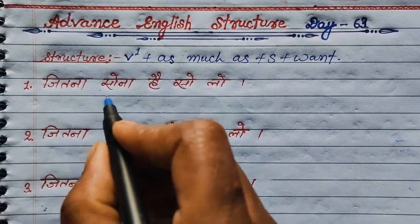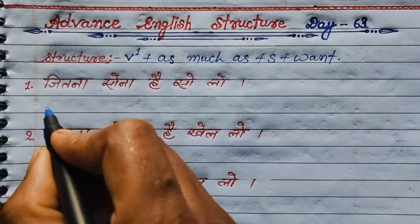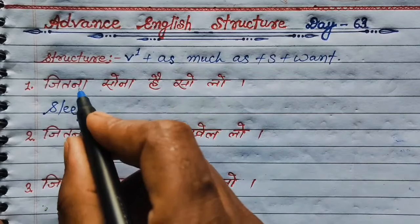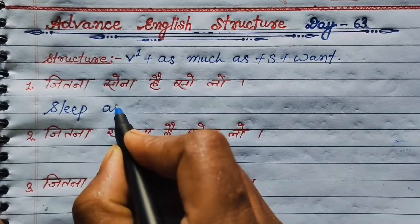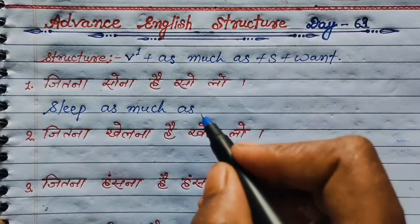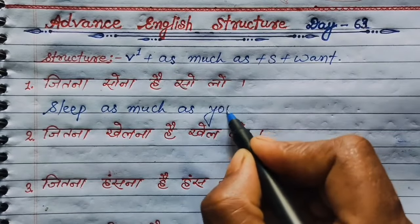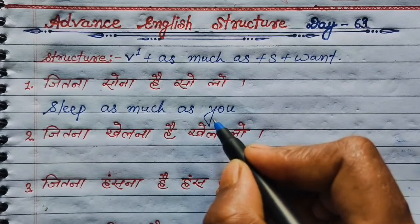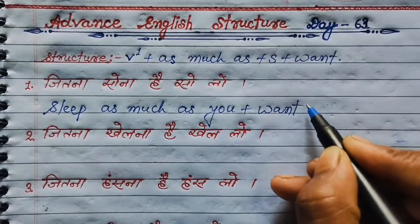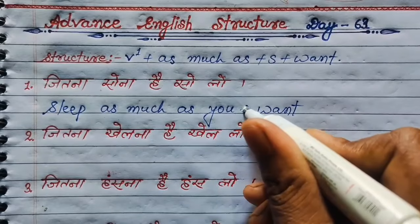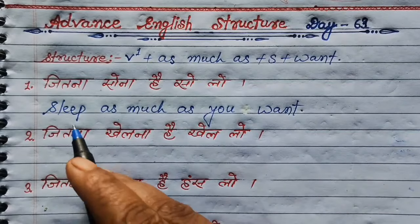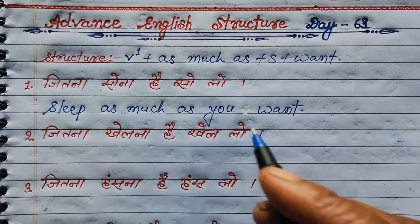First one: जितना सोना है, सो लो। तो सोना में verb है। सोना की English sleep होती है। Sleep, then as much as, then subject — you, क्योंकि second person से बात कर रहे हैं — then want. Sleep as much as you want.